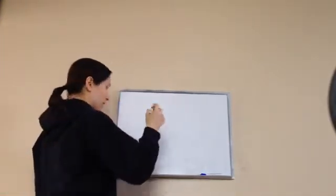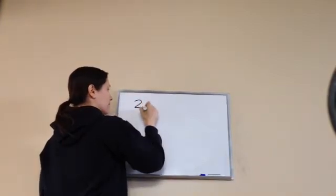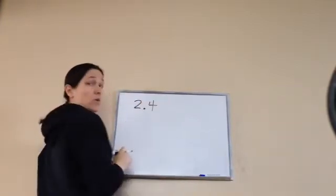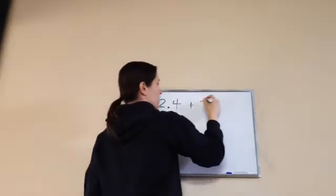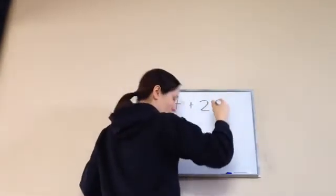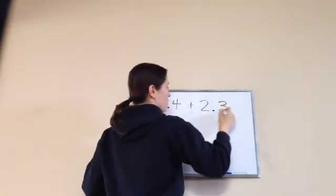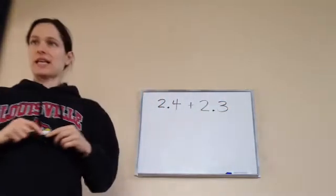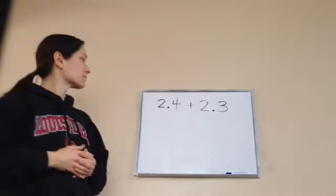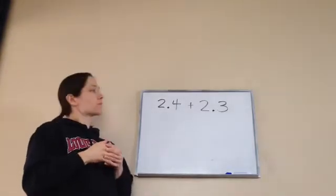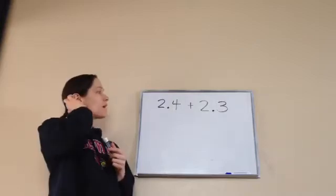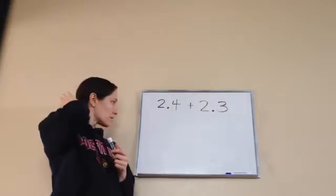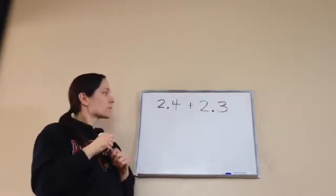Eli, if I said that I wanted you to add 2.4 or 2 and 4 tenths and add that to 2.3, what would the answer be? Okay, it would be 4.7. Very good.